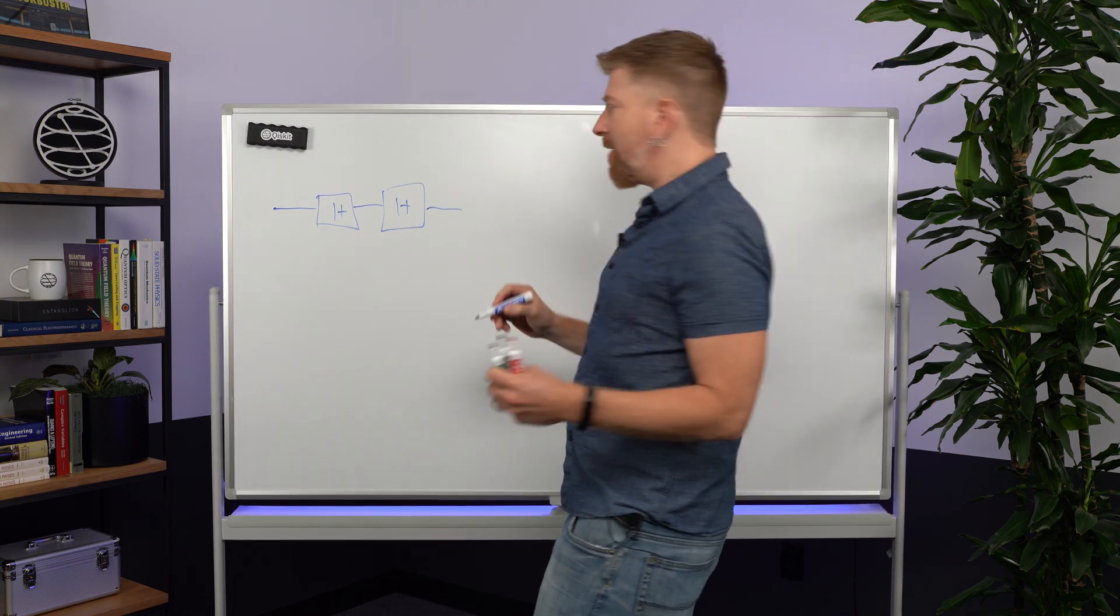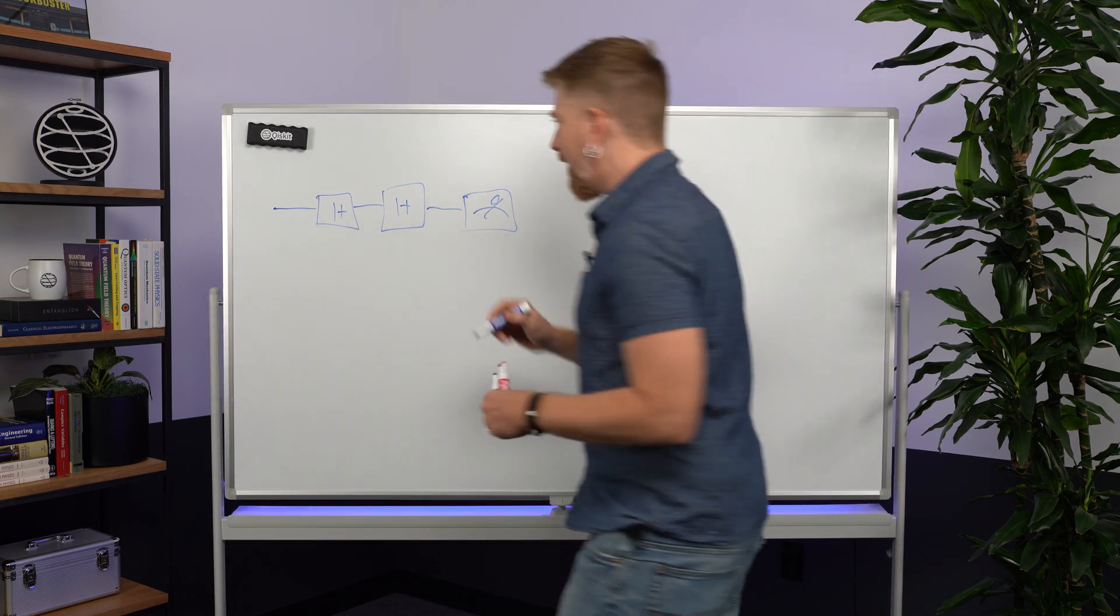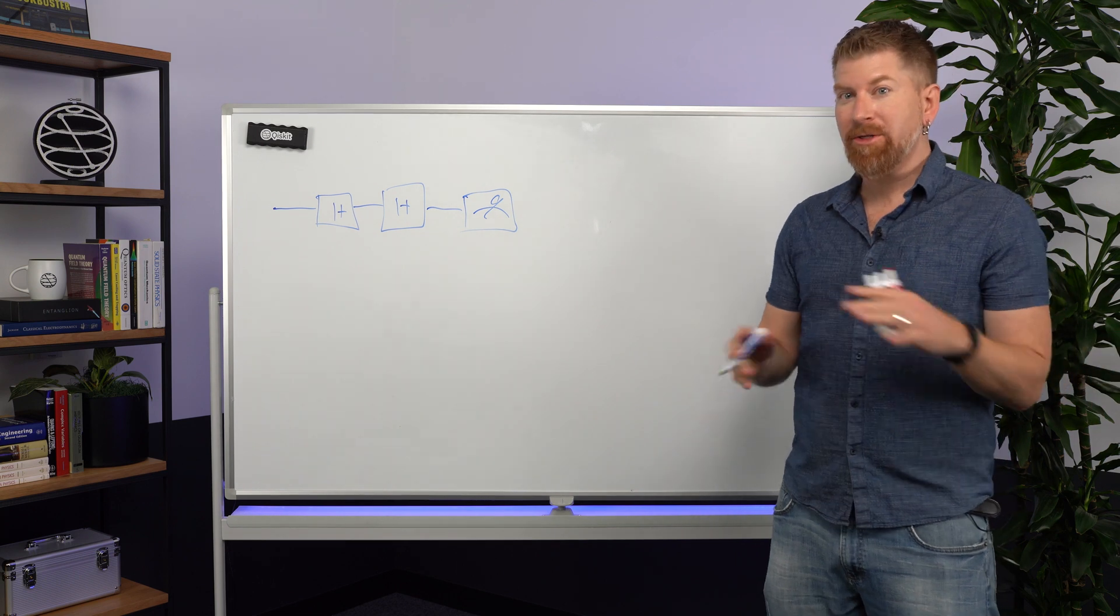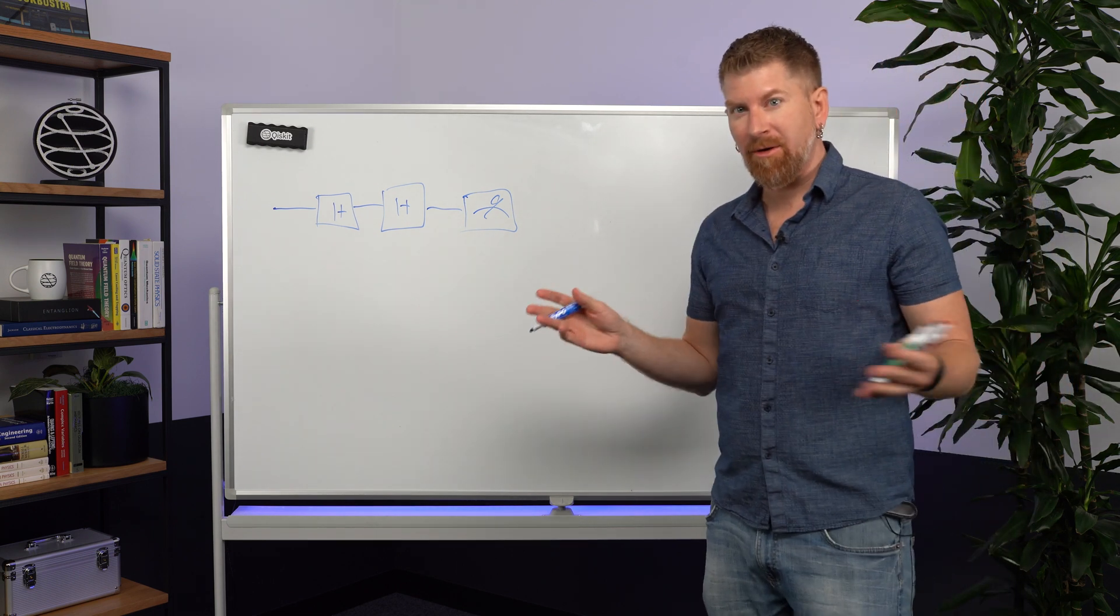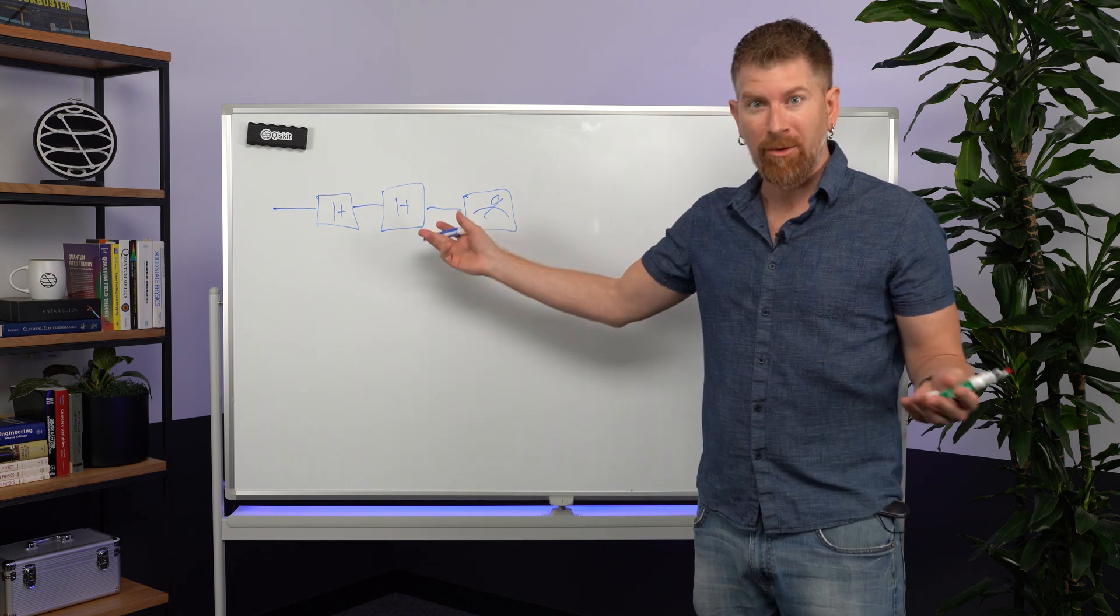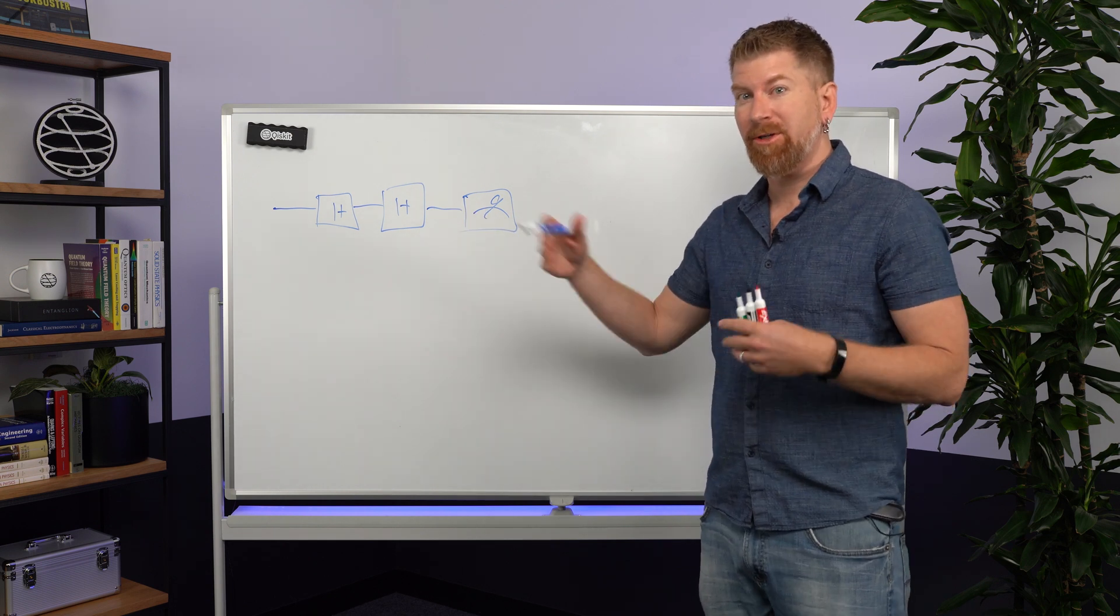And then I want to do, say, a measurement, whatever. Okay, so I take this circuit. It turns out this circuit does not really exist on our quantum hardware, on our superconducting hardware. It doesn't know what a Hadamard is. We need to do something called transpile.